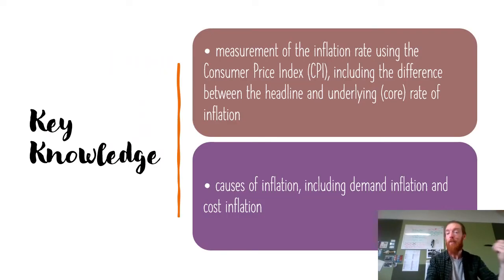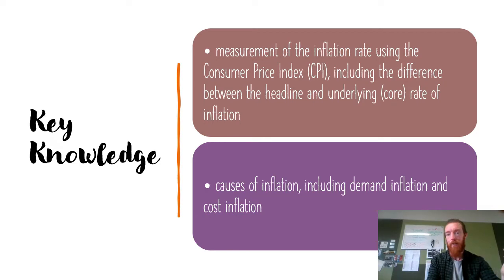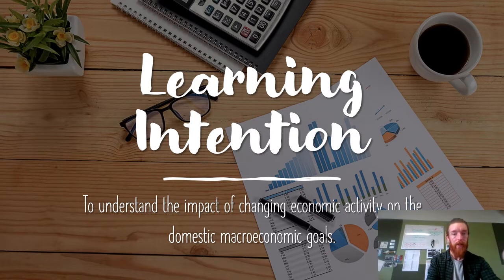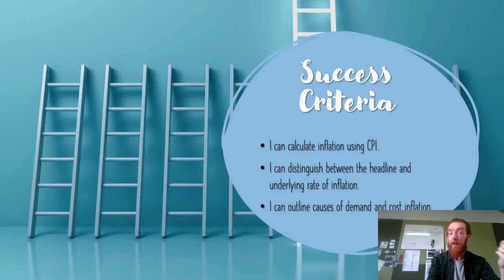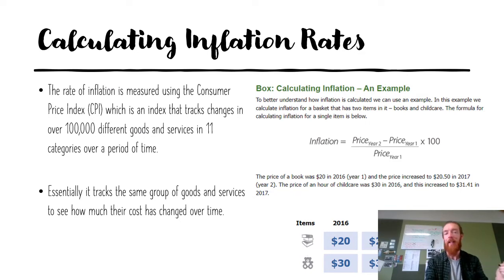Our key knowledge today is the measurement of the inflation rate using the Consumer Price Index, or CPI, including the difference between the headline and underlying or core rate of inflation, and the causes of inflation, including demand inflation and cost inflation. Our learning intention is to understand the impact of changing economic activity on the domestic macroeconomic goal of low inflation. Our success criteria is that you can calculate inflation using CPI, distinguish between the headline and underlying rate of inflation, and outline causes of demand and cost inflation.